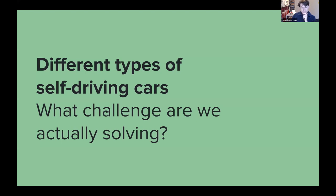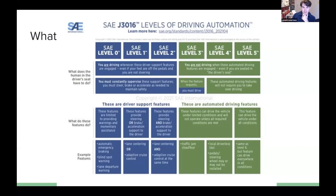There are different types of self-driving cars. In the media everyone talks about self-driving cars as if it's one thing, but there are multiple challenges. There's a big difference between level zero — no support at all — all the way to level five, which means the car completely drives itself. You are not needed anymore, and it can drive whenever and everywhere.